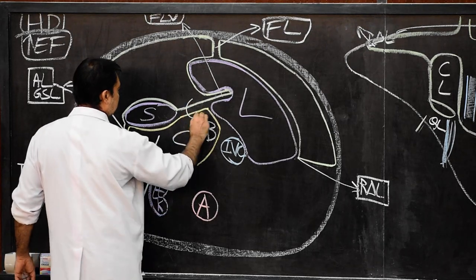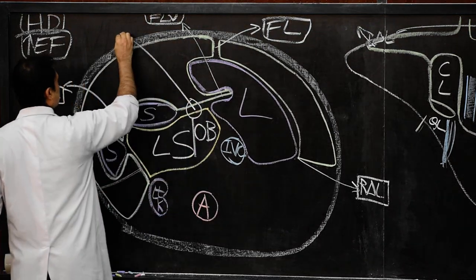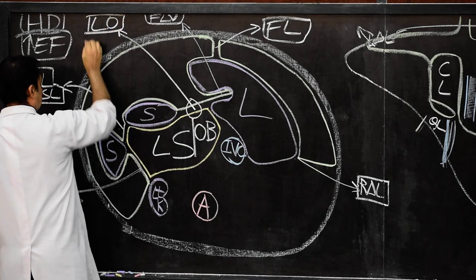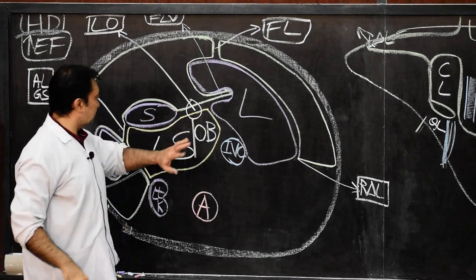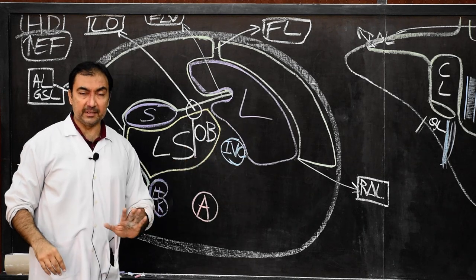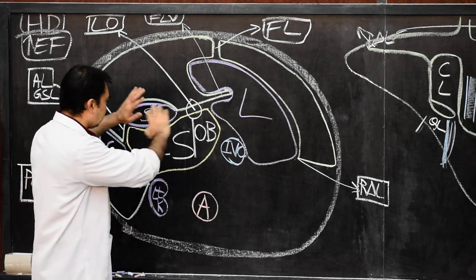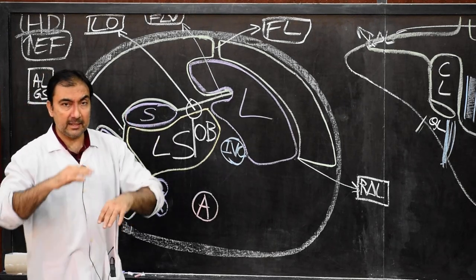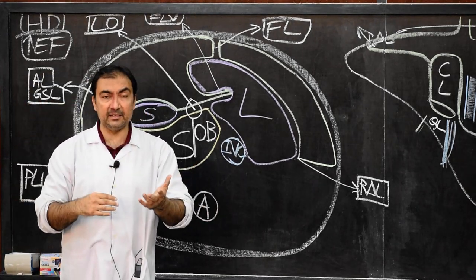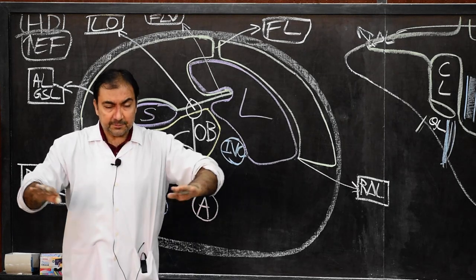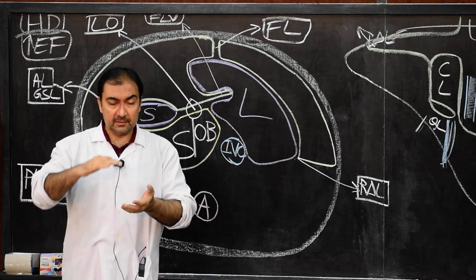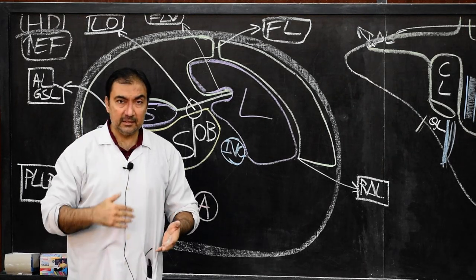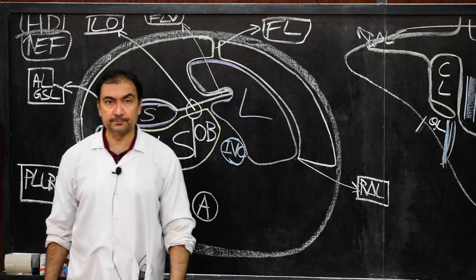The last segment to label is the lesser omentum. After marking the lesser omentum, our entire diagram is complete. This is how you have to understand the horizontal disposition of peritoneum above the level of epiploic foramen. Coming up in our next segment is the horizontal disposition of peritoneum between the epiploic foramen and the root of transverse mesocolon. Thank you very much.